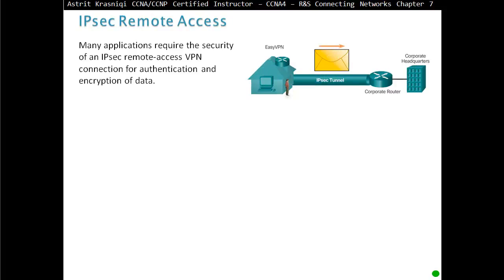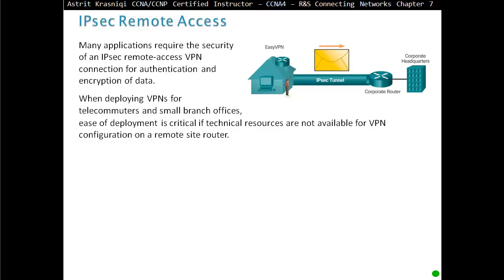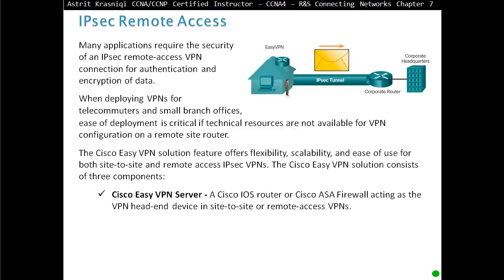IPSec Remote Access: many applications require the security of an IPSec Remote Access VPN connection for authentication and encryption of data. When deploying VPNs for telecommuters and small branch offices, ease of deployment is critical if technical resources are not available for VPN configuration on remote site routers. The Cisco Easy VPN solution features offer flexibility, scalability, and ease of use for both site-to-site and remote access IPSec VPN.